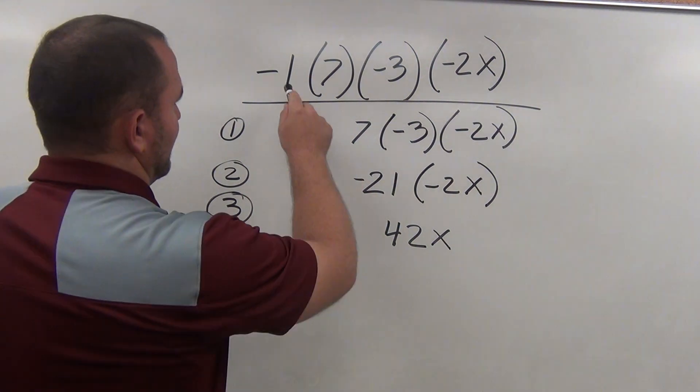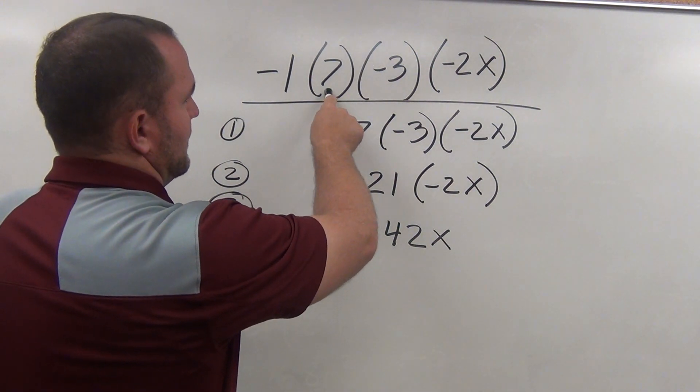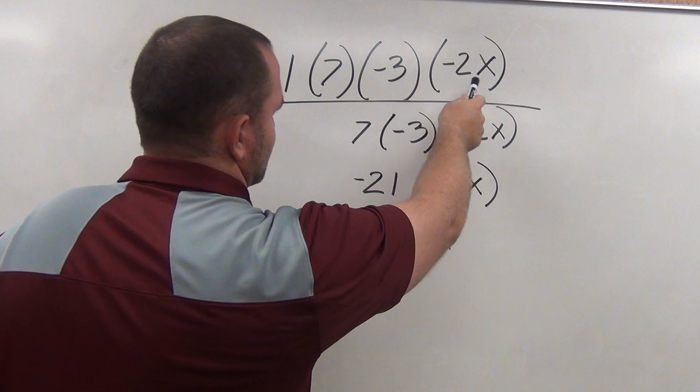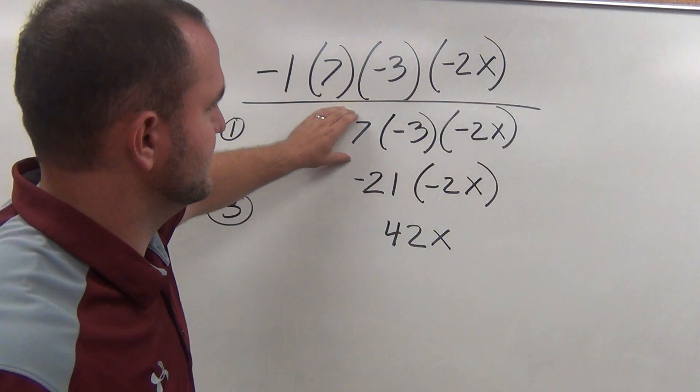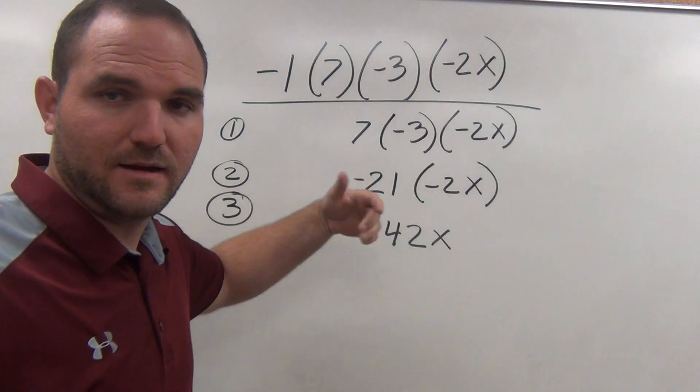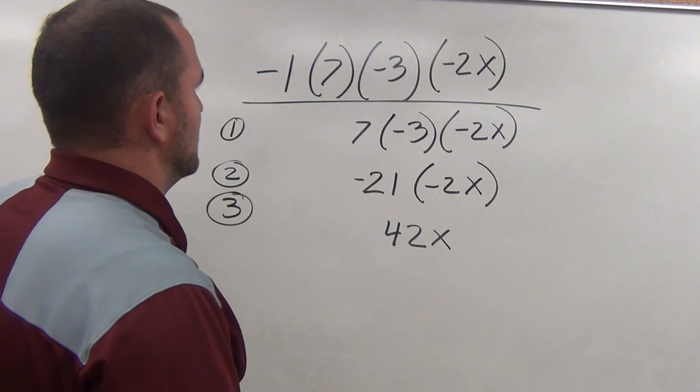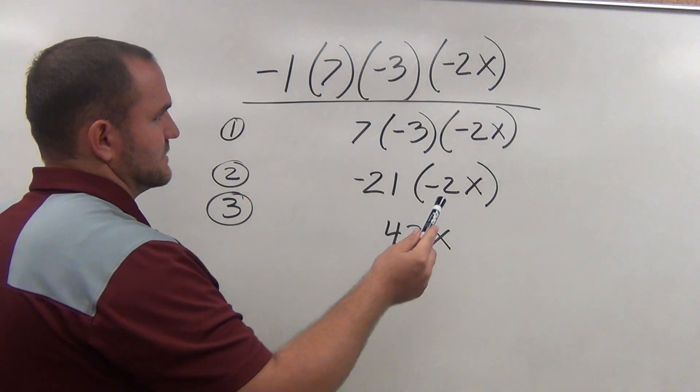Now, what you have here is negative 1 times 7 times negative 3 times negative 2x. And so what you have to do is look at this next step and figure out what they did and if it was correct.